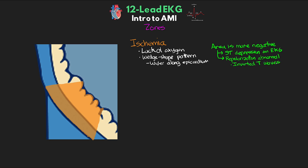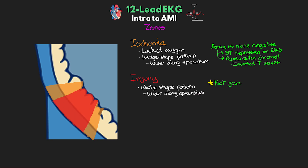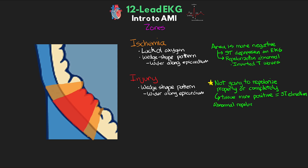Progressing along, if we look at injury, we also see a similar wedge-shaped pattern wider near the epicardium, just like with ischemia. A big difference now is this area of injury is not going to repolarize properly or completely, keeping this tissue more positive than normal myocardial tissue. The result of this is ST elevation appearing on our EKG. Again, the repolarization is taking place abnormally, leading to persistent T wave inversion.